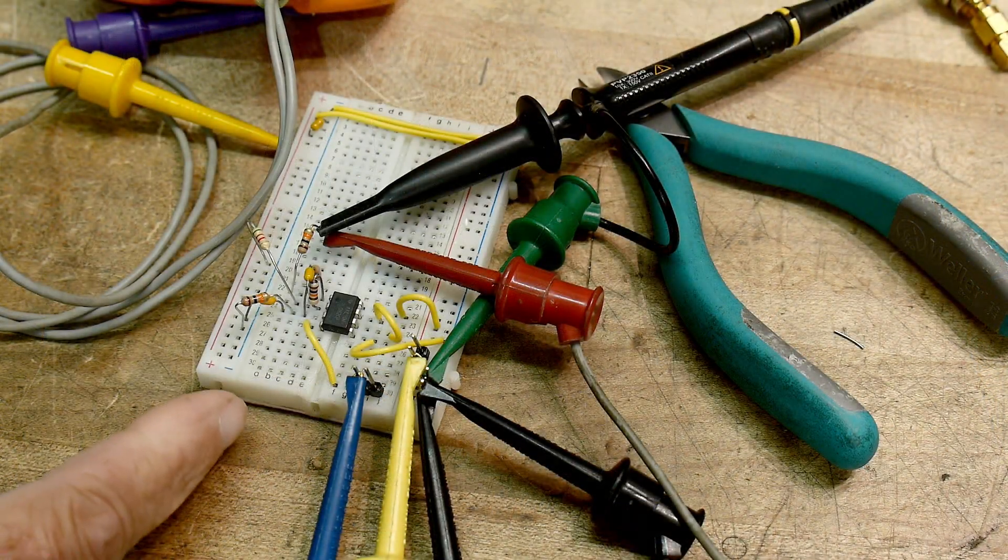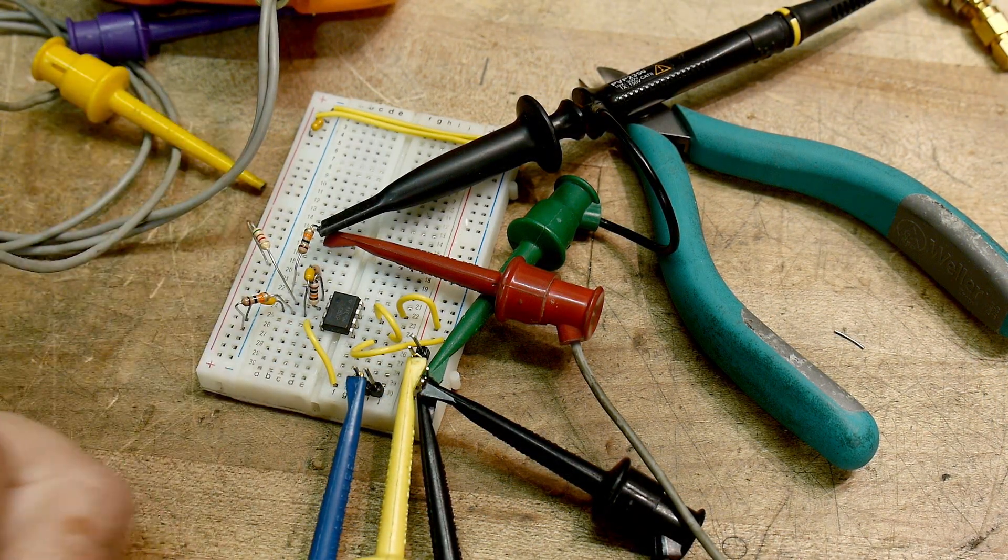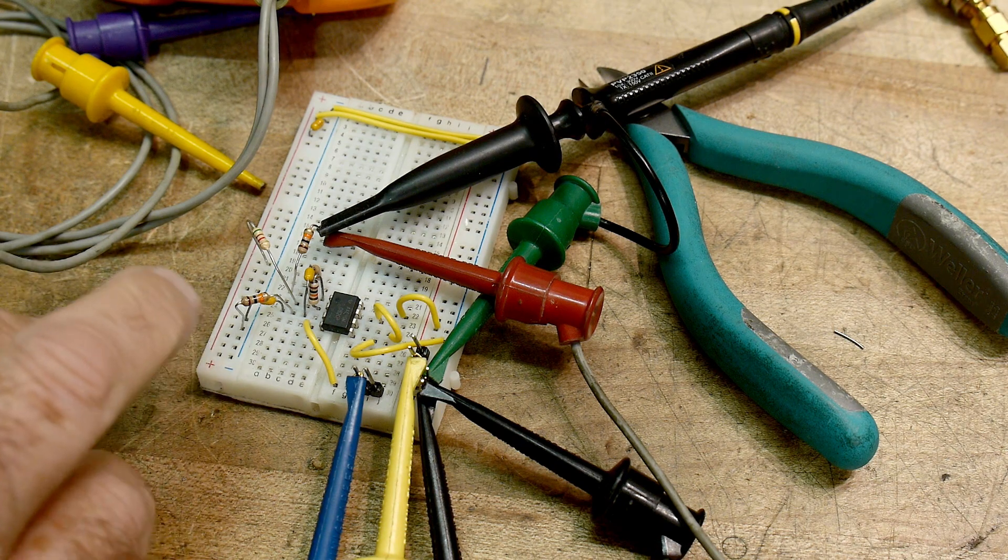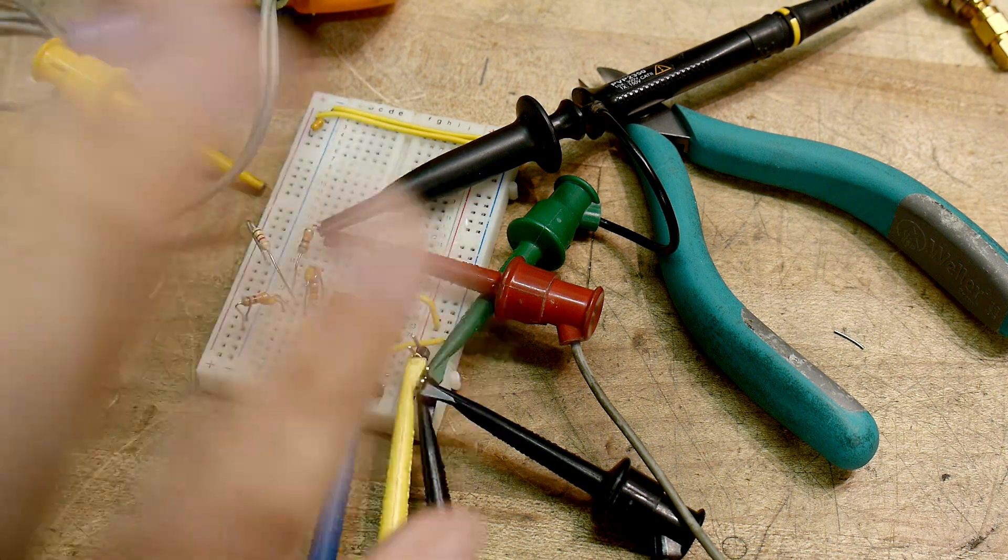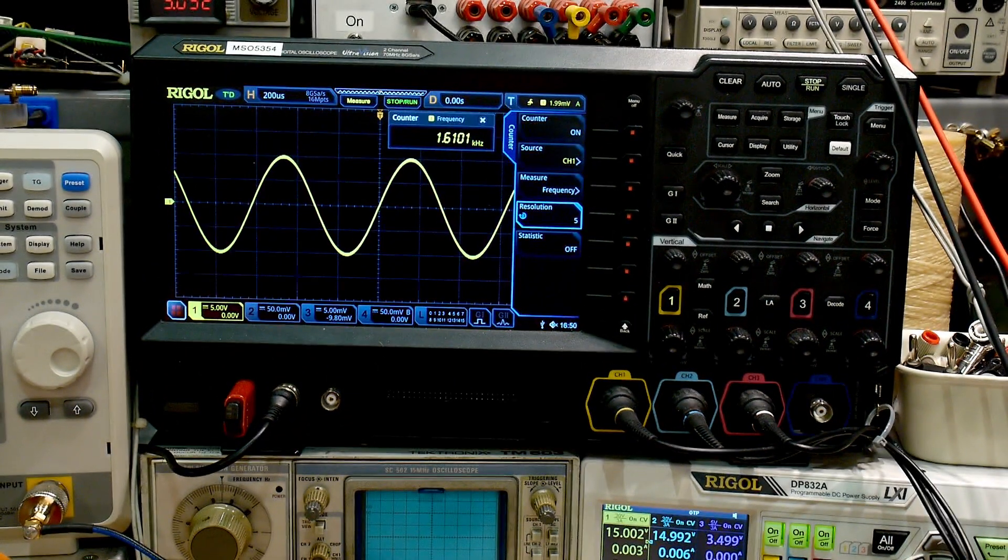All right. So here's my little circuit. It's all on a breadboard, so it can't be very good. And I, like I said, I'm just using 10 Ks and 0.01s and it oscillates. Amazing.